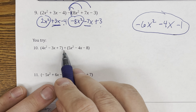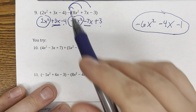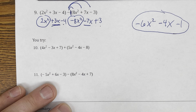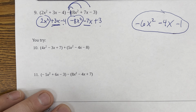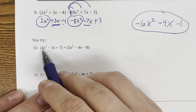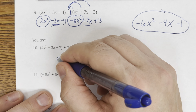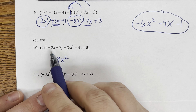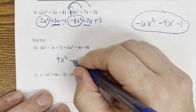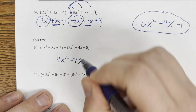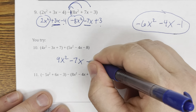Hopefully you had some good success. The first problem is addition, so I can just add — I don't need to rewrite the plus signs, but we should rewrite minus signs. I have 4x and 5x squared, so that adds up to 9x squared. Negative 3 and negative 4x is negative 7x. Then 7 and negative 8 is negative 1.